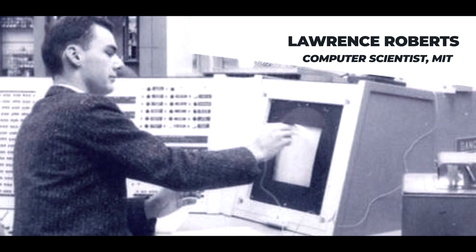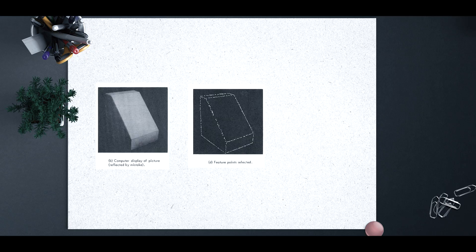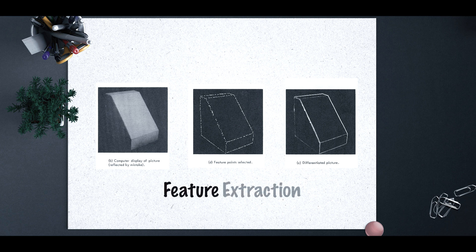And this journey has been a long one. It started back in the 1960s. Take Lawrence Robert, for example. His work on finding edges opened the door to what we now call feature extraction, which means identifying elements like lines, corners, and textures in images. It basically showed that computers can understand shapes.